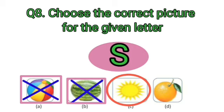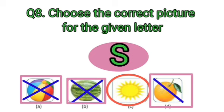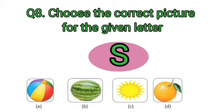And the fourth option is, Orange. No children. Not at all. So, the correct option is, C, S, Sun. Very good.